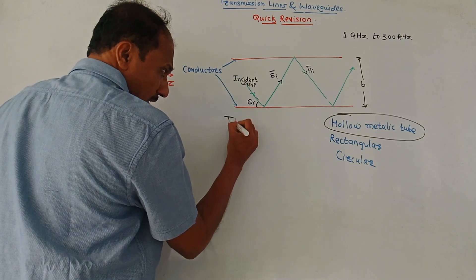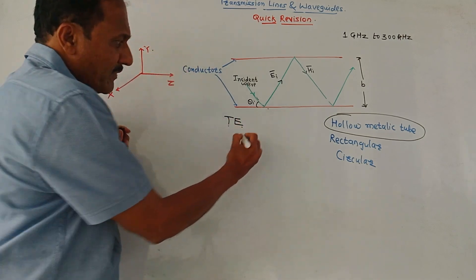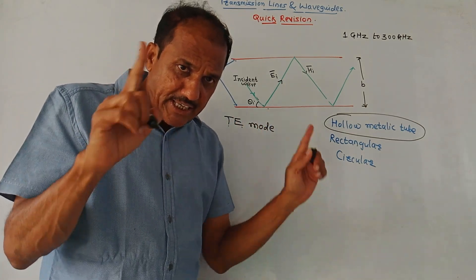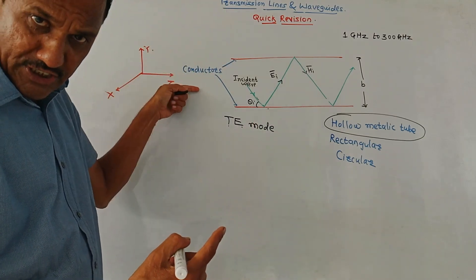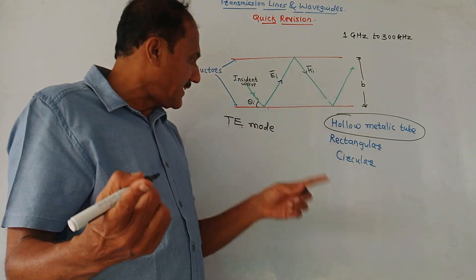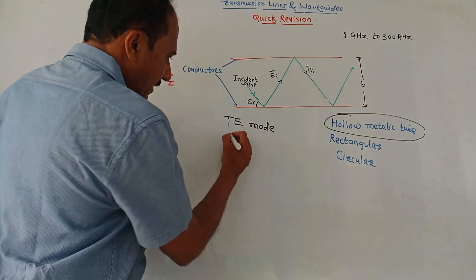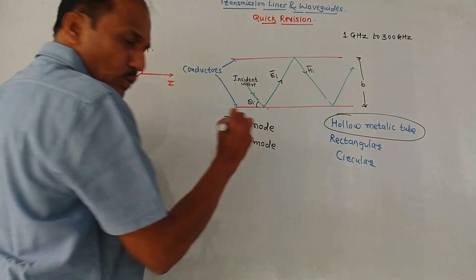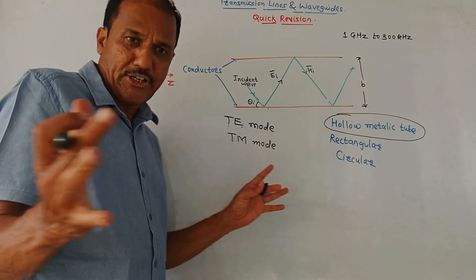This is the diagram related to the rectangular wave guide. There are two important terms. One is TE, that is transverse electric mode. As the name indicates, if the electric field intensity is transverse to the Z direction — the direction of propagation — it is called TE mode. Transverse means perpendicular. If the magnetic field is transverse to the Z direction, then it is called TM mode, that is transverse magnetic mode.